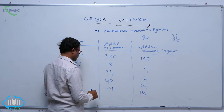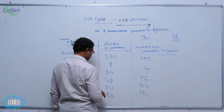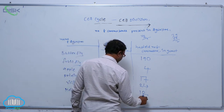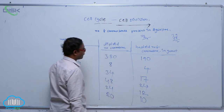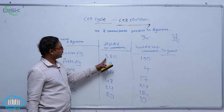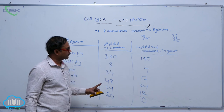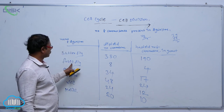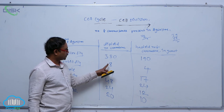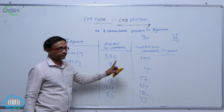In rice, the diploid number of chromosomes is 20, and the haploid number of chromosomes is 10. In butterfly, the diploid number of chromosomes is 8, and the haploid number of chromosomes in the gamete is 4.